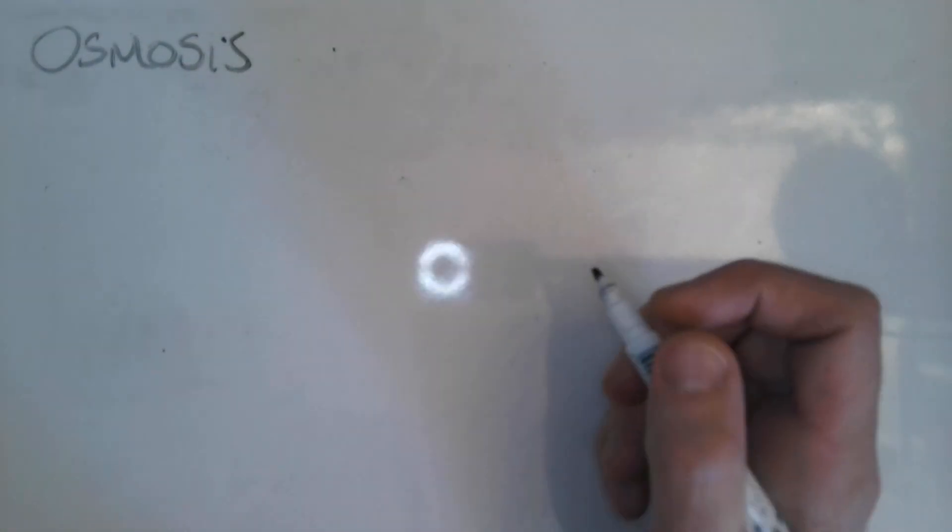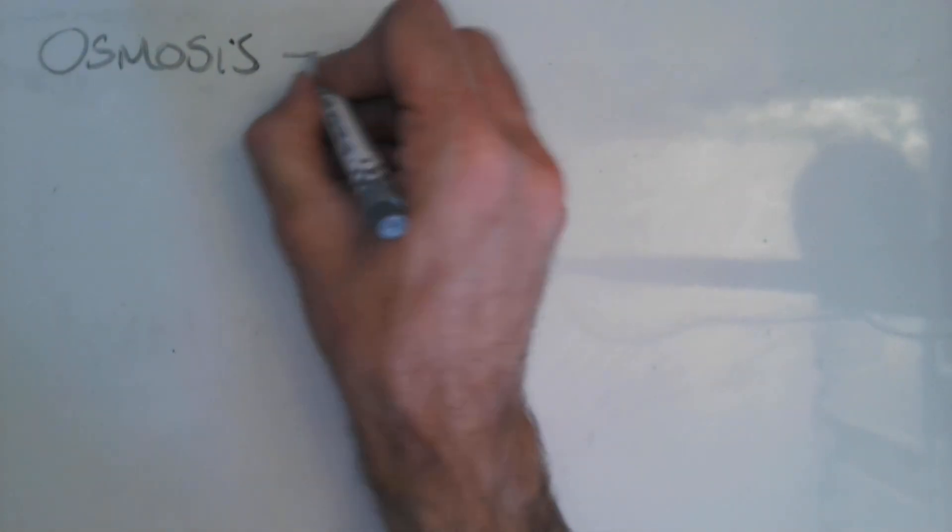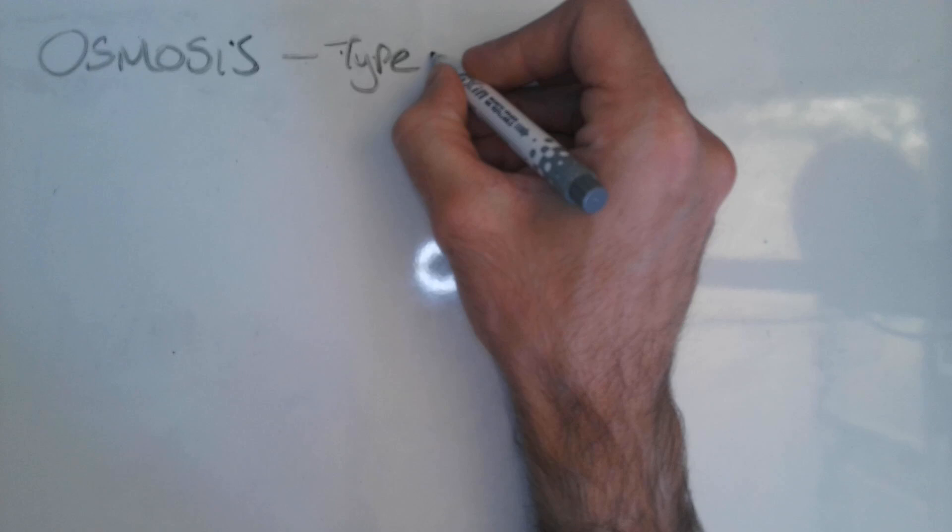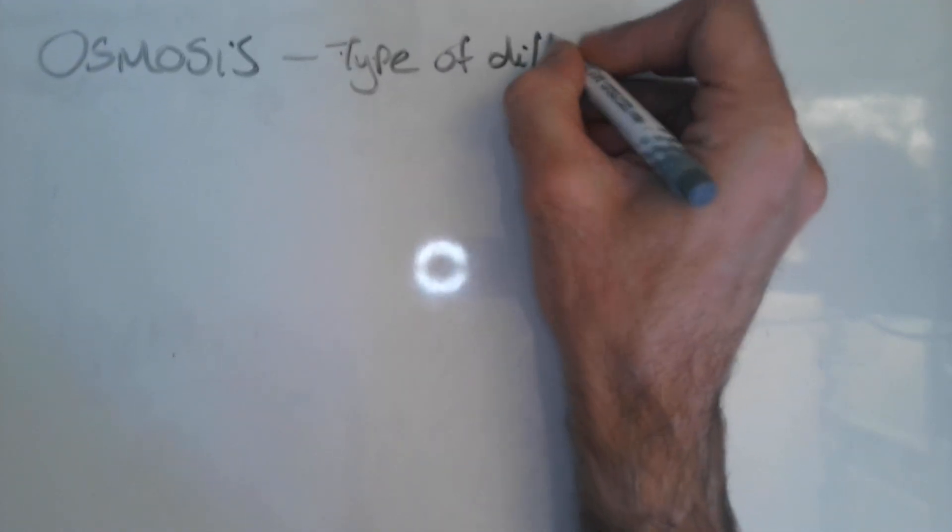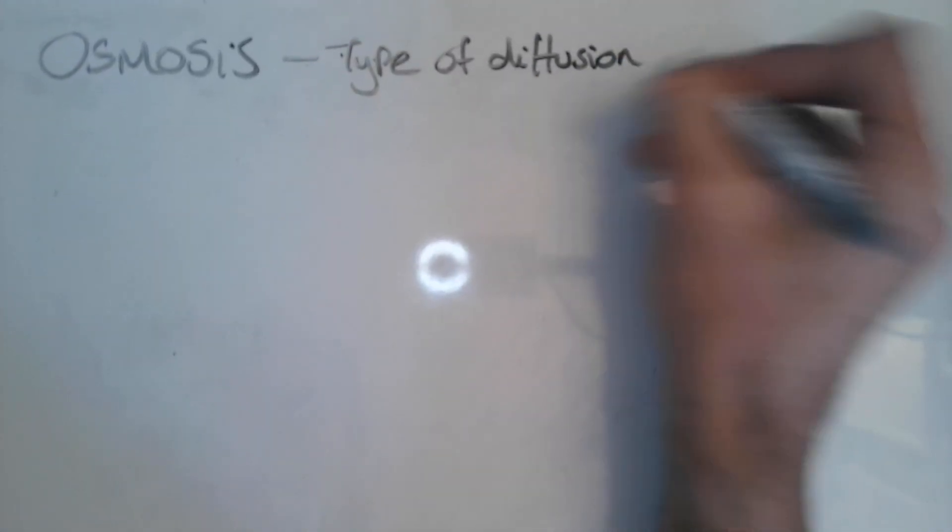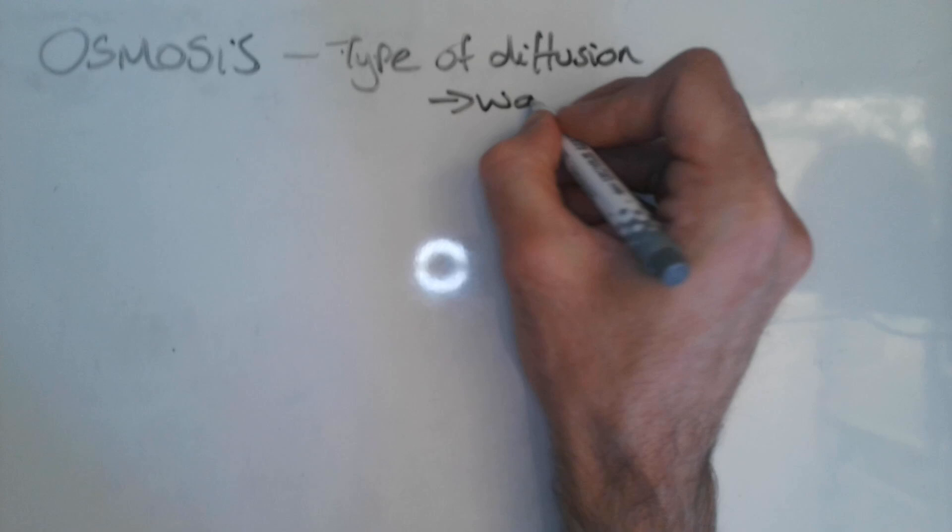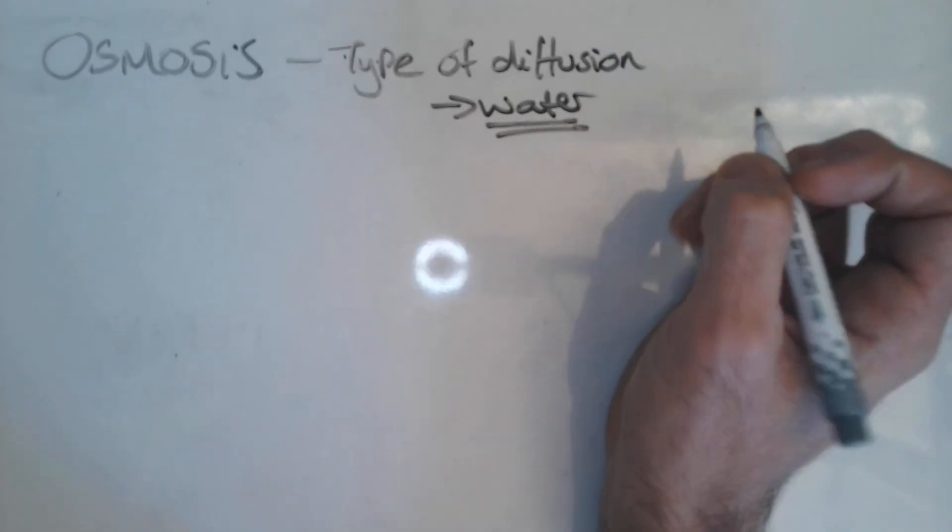So today we're going to look at osmosis. Osmosis is a type of diffusion that specifically focuses on water. So it's all about the movement of water.